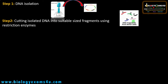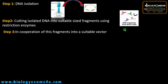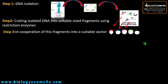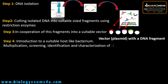Each gene fragment is introduced into a different plasmid vector using restriction enzymes and ligases to make the recombinant vector. The next step is introduction of this recombinant plasmid into a suitable host like bacteria, followed by multiplication, screening, identification, and characterization of clones or colonies that contain these genes. After screening and characterization, we have colonies with A gene, B gene, C gene, D gene, and E gene — the plasmid replicates inside the bacteria, producing many copies of each particular gene.